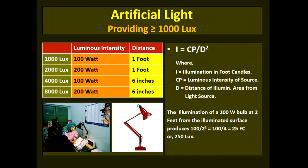Illumination from lamps is given by the formula where I equals illumination in foot-candles, CP is the luminous intensity of the source, and D is the inverse of the distance from the source to the illuminated area. A 100-watt lamp kept 1 foot away gives 1000 lux of illumination. Changing to 200 watts at 1 foot distance gives 2000 lux, and a 200-watt bulb at 6 inches gives 8000 lux of illumination.